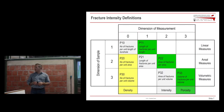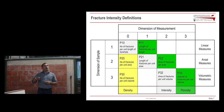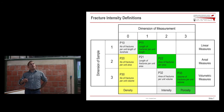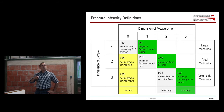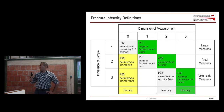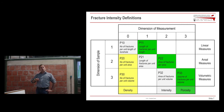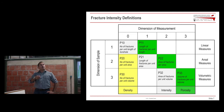When it comes to intensity, we have different measures. We talk about the number of fractures to populate the region. We can use number of fractures per unit length (P10) if using a scan line or borehole, total length of fractures per unit area (P21) for surface mapping, or ideally area of fractures per unit volume (P32). We prefer P32 because P10 and P21 are directionally dependent — they depend on borehole orientation and whether you intersect more or fewer fractures. P32 is orientation independent.